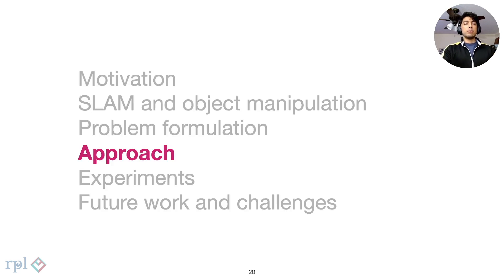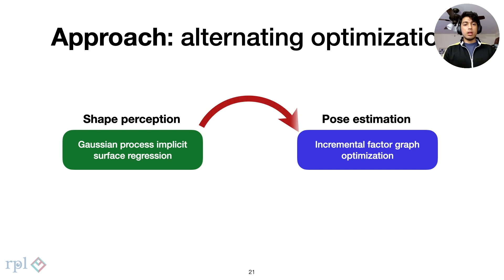We shall now go over the approach. Our approach alternates between mapping and localization steps. We combine a Gaussian process implicit surface regression with factor graph based optimization.